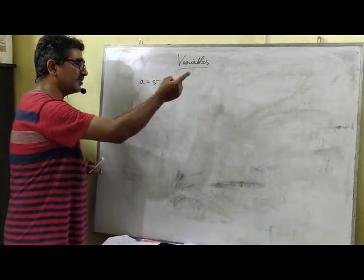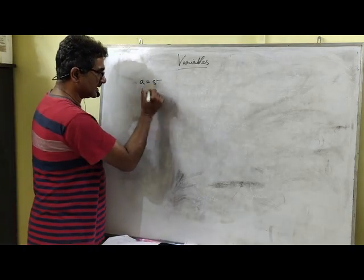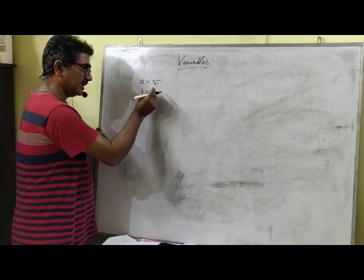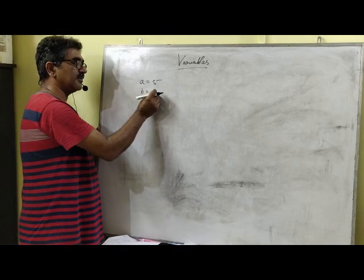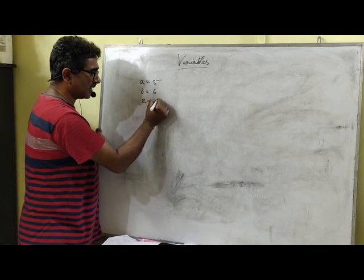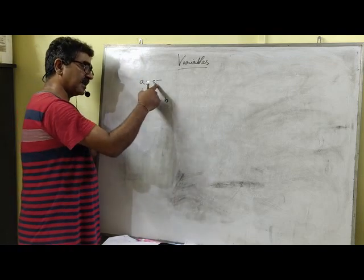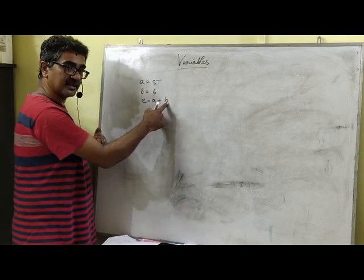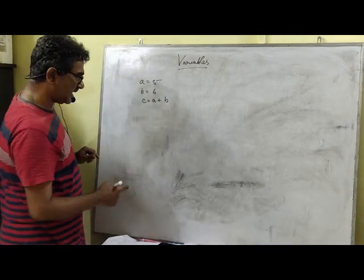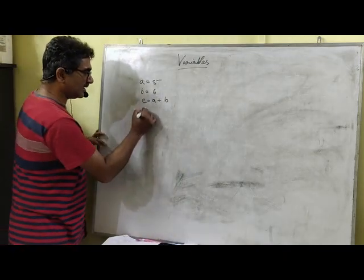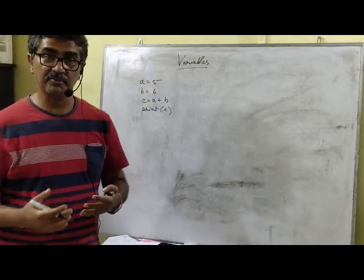Similarly, when I write B equal to 6, this particular value 6 gets stored in the memory and it is referred by the name B. When I write C equal to A plus B, now what is happening? A refers to the memory location which contains the number 5 and B refers to that particular memory location which contains 6. So these two numbers get added and get stored inside C. Now if you write print C, obviously it is going to print 11. So this is how variables work.